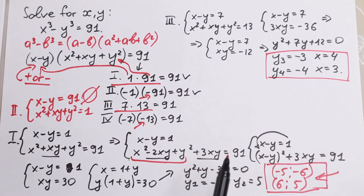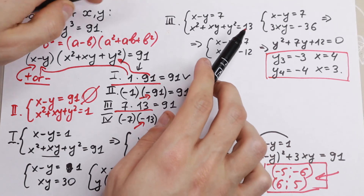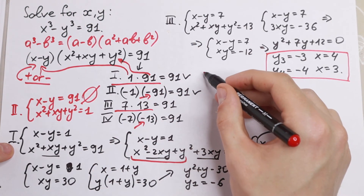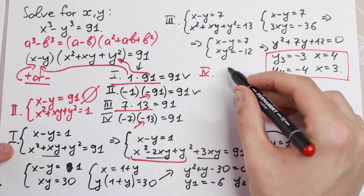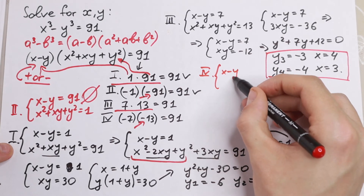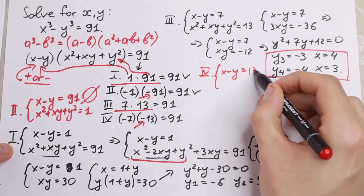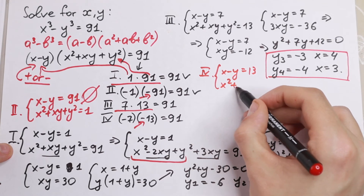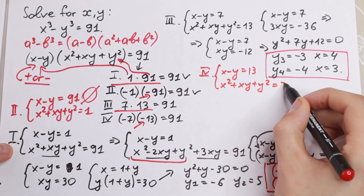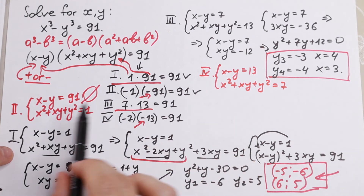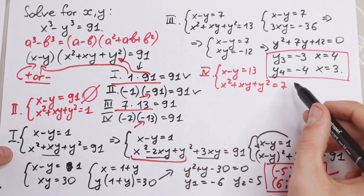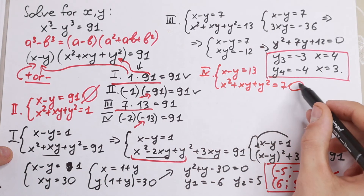The fourth case swaps to x minus y equals 13 and x squared plus xy plus y squared equals 7. This is similar to the second case and also has no solution.